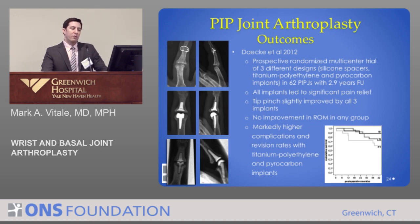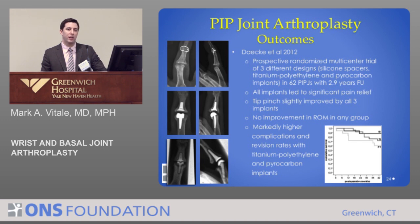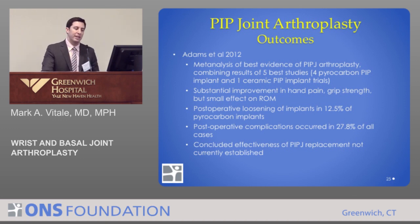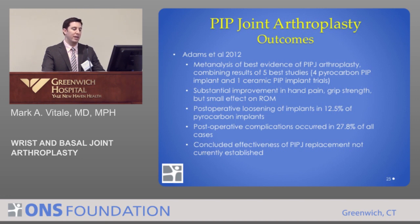A recent prospective randomized trial compared the pyrocarbon implant, the Avanta implant, and silicone implants. While all implants led to improvement in pain, there was no improvement in range of motion in any group, and there was a markedly higher complication rate with the two surface replacement designs. Adams in 2012 reviewed the five best studies for PIP joint replacement and found that while it improves hand pain and grip strength, it does not reliably improve range of motion — some patients actually lose motion. Post-operative loosening occurred in 12.5%, complication rates in almost a third, and the authors concluded that the effectiveness of PIP joint replacement is not established today.